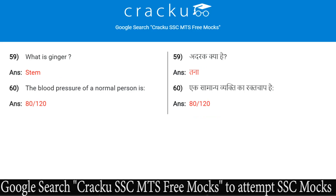What is ginger? It is a stem. The blood pressure of a normal person is 80 by 120.